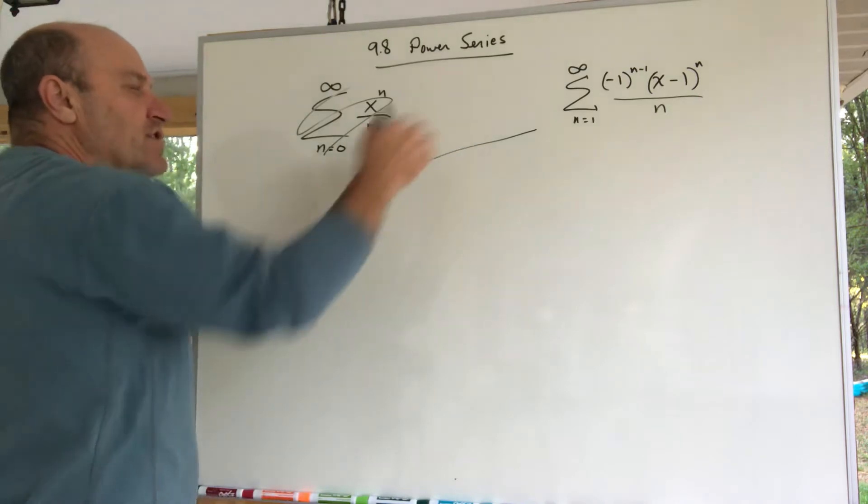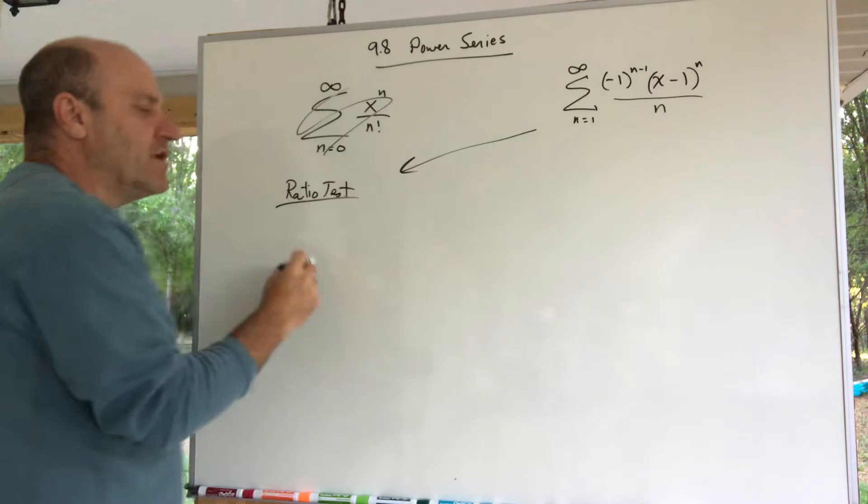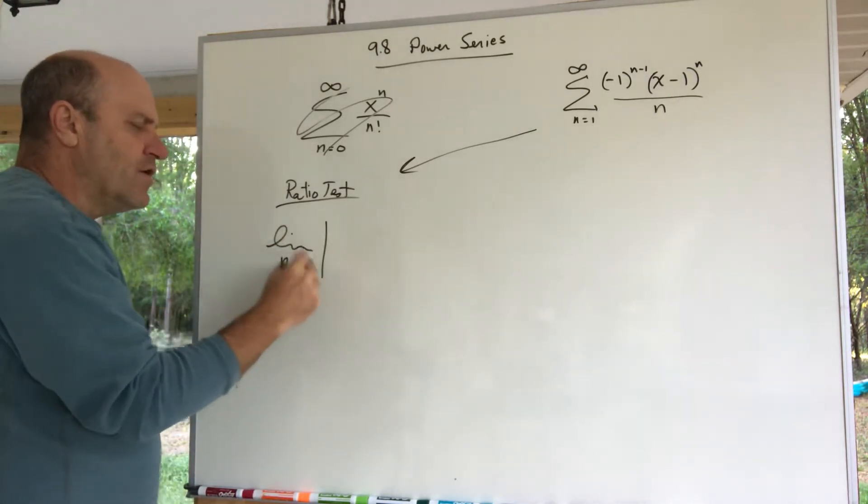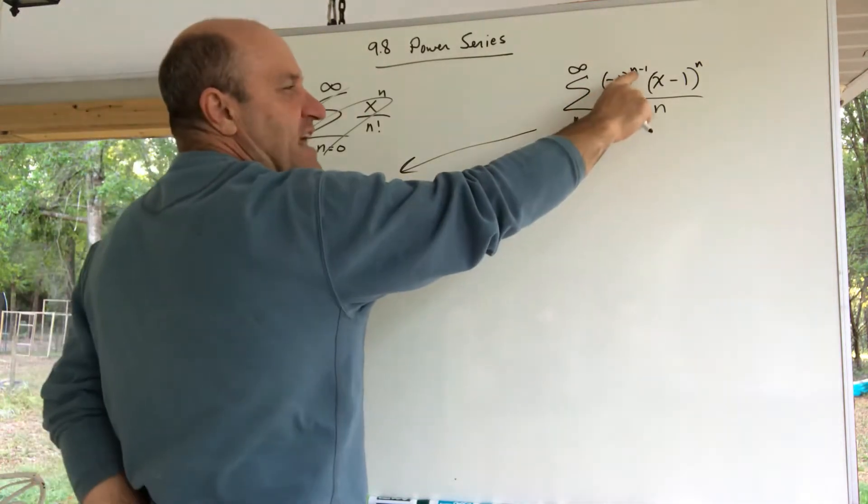So here we go. We do the limit as n goes to infinity. You know the ratio test means you do the nth plus one term—that means you replace all these n's with n plus one.